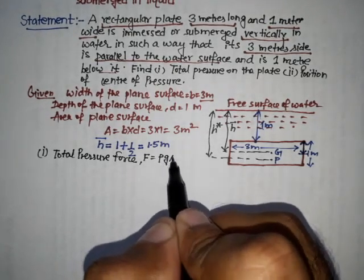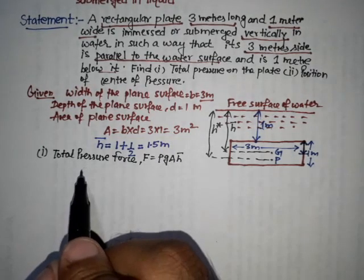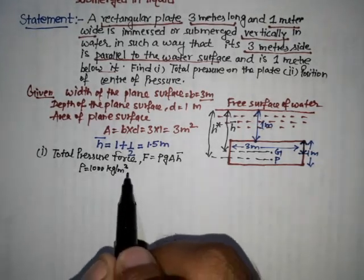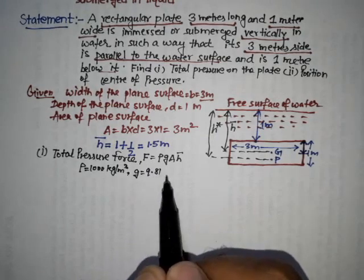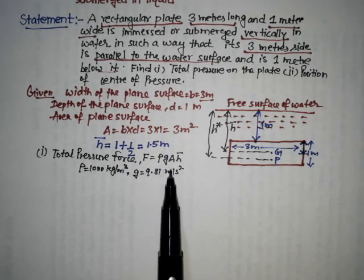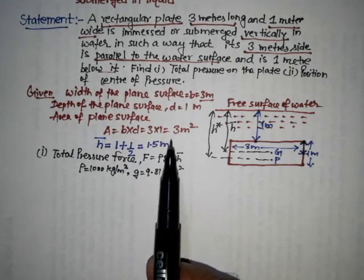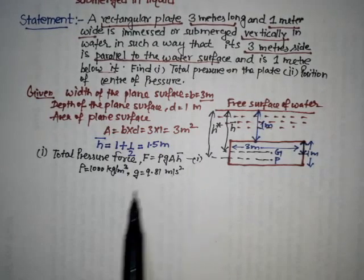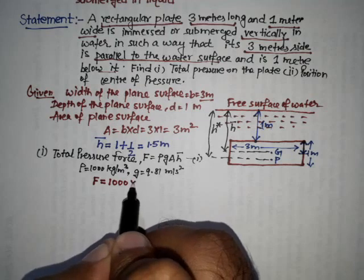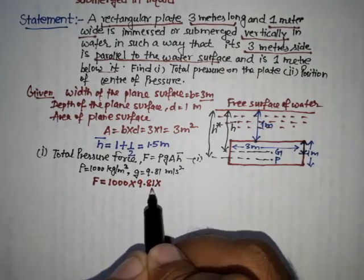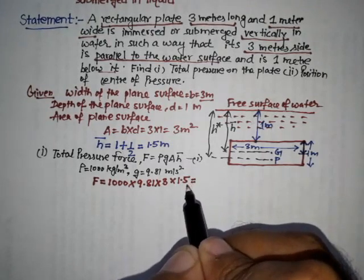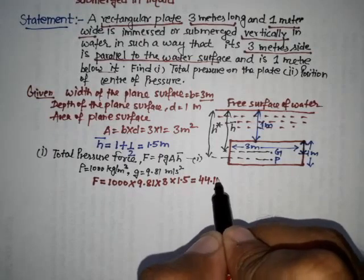The total pressure force F equals rho times g times A times H bar, where density of water is 1000 kg per meter cube, g is 9.81 meter per second square, H bar is 1.5 meter, and area is 3 meter square. Substituting all these values: F equals 1000 into 9.81 into 3 into 1.5, which equals 44.14 kN. So this is the total pressure force.